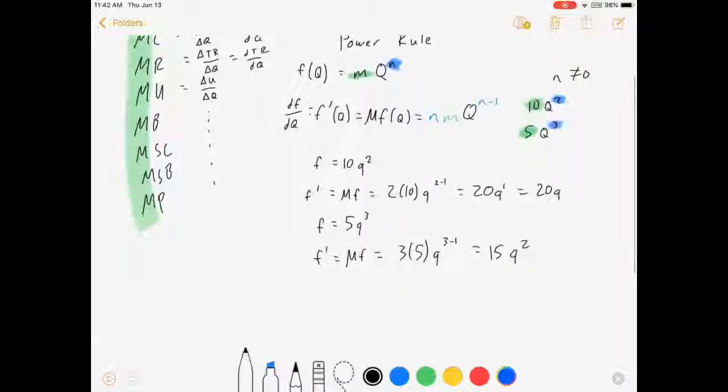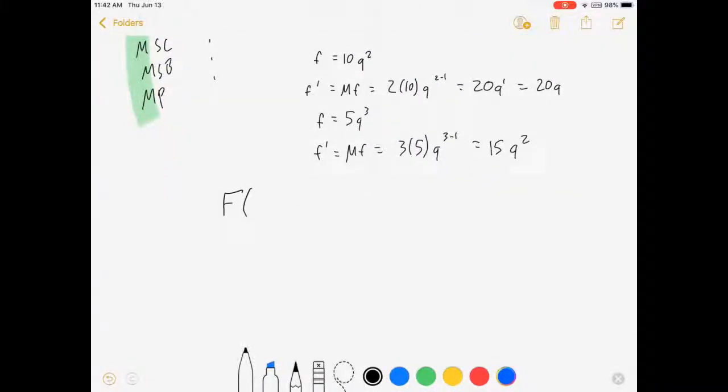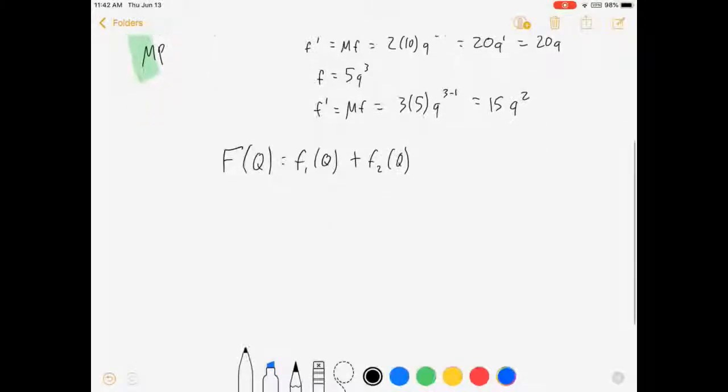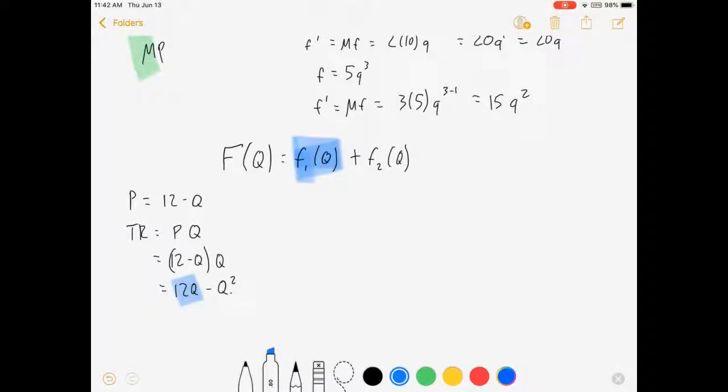Now I want to expand on this just a little bit. What if we have a bigger function of q where f of q is equal to some function f1 of q plus another function f2 of q? Now what might this look like? Let's take total revenue for instance. If we have a demand curve so the price equals 12 minus q, and I want to get total revenue based on whatever my q is, total revenue is equal to price times quantity, which in this case is equal to 12 minus q times q. F1 of q, which is 12q minus q squared.